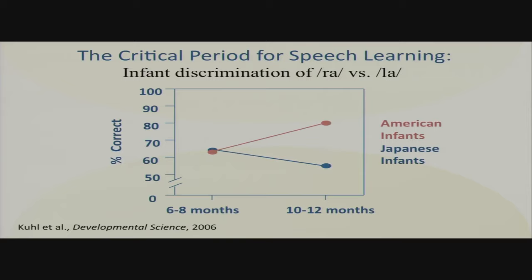They change from babyhood — that universal stage — to the more language-bound listeners before first words at 12 months. Here's one of the studies, done in the United States here in Seattle and in Tokyo, using the contrast Ra/La — very important to English but completely unimportant to Japanese, not utilized to distinguish words.